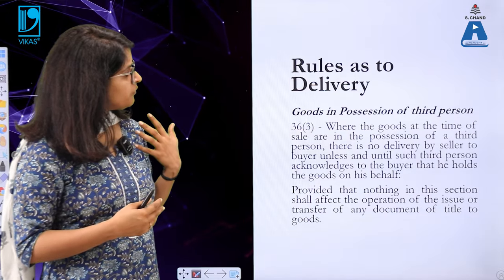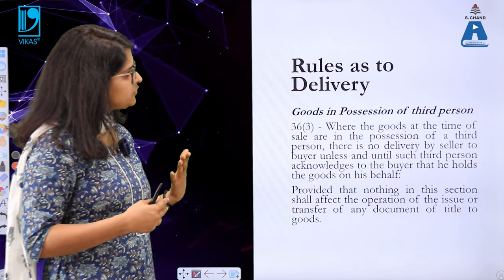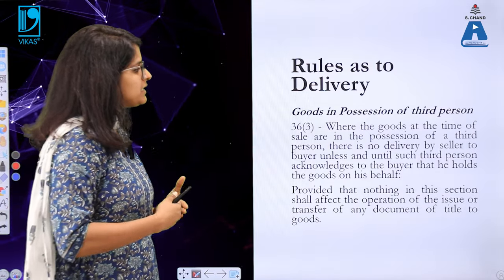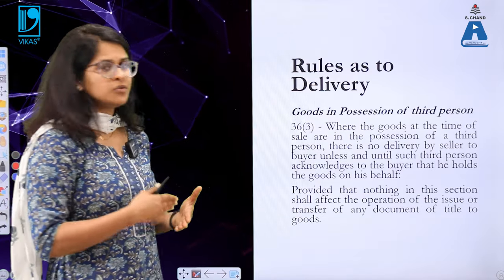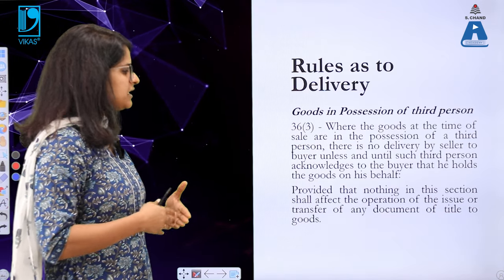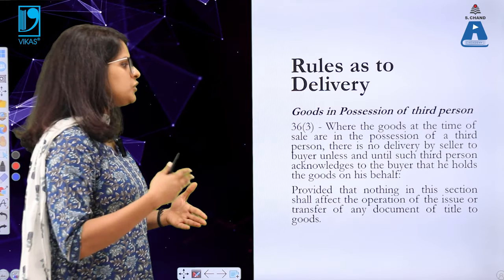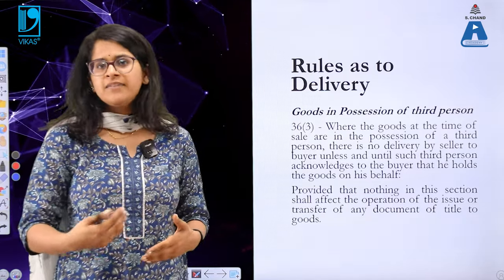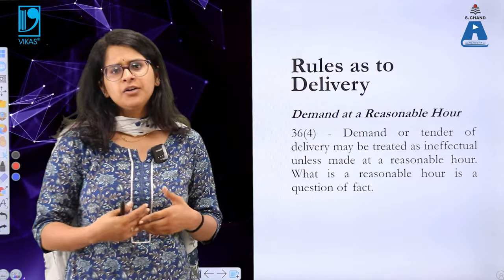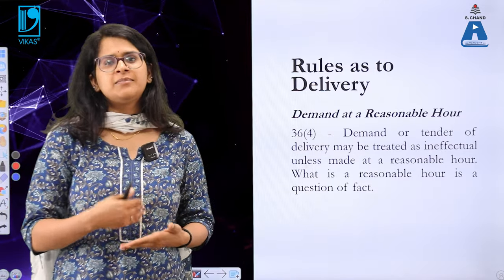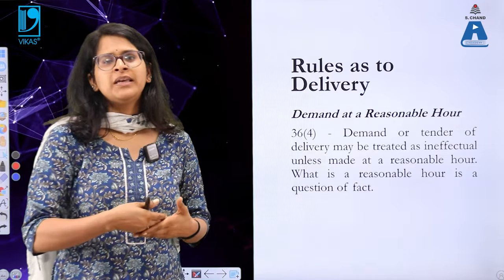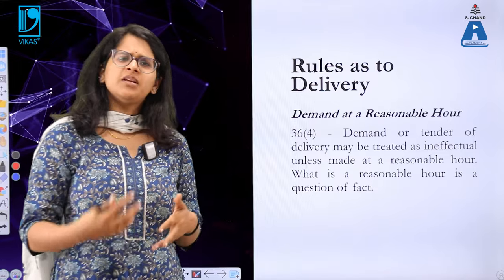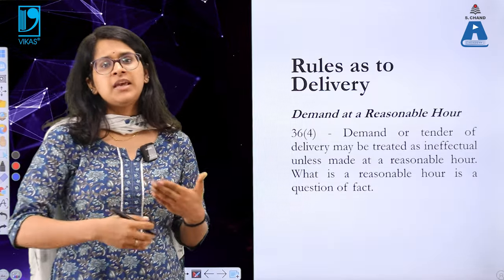Subsection 3 states: where the goods at the time of sale are in the possession of a third person, there is no delivery by seller to buyer unless and until such third person acknowledges to the buyer that he holds the goods on his behalf. Regarding demand for delivery, it has to be made at a reasonable hour — you cannot expect the seller to make a delivery at 1 a.m. What is reasonable also refers to how things operate in that particular industry.